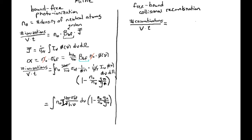Now looking at the collisional side: the number of recombinations per volume per time is expressed as n₊ · n_e · σ_fb(v) · v · f(v) dv, where n₊ is the number density of ionized atoms, n_e is the electron number density, v is electron velocity, and f(v) is the distribution of electrons over velocity. To get the total recombinations, we integrate over all electron velocities.